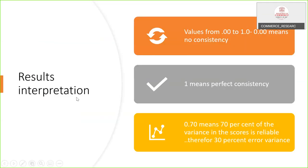For result interpretation, the Cronbach alpha scores may be values from 0.00 to 1. If the value is 0.00, zero means no consistency. The scale should be avoided and we have to reframe the scale and again collect the data from the respondents. If 1, it means perfect consistency, we can go for further analysis. At least we should be able to get 0.70, which means 70% of the variance in the scores is reliable. That means only 30% error variance.